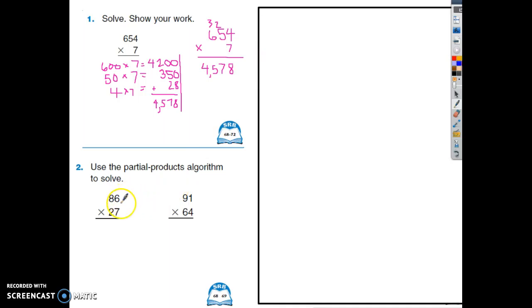It gets a little trickier as you get to a 2-digit times a 2-digit. So we are going to just focus on 86 times 27. So think about who's on team 86. We've got 80 and 6, who's on team 27, 20 and 7.